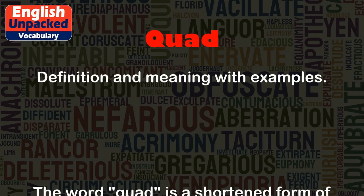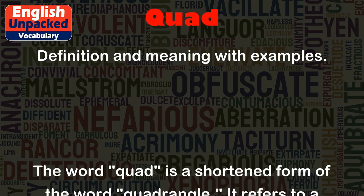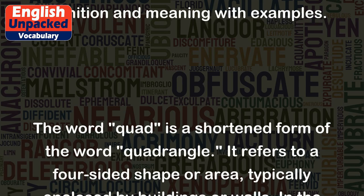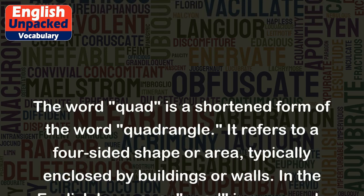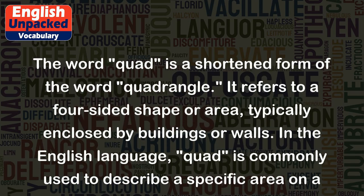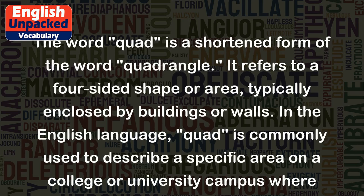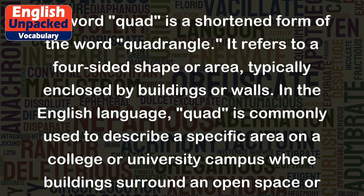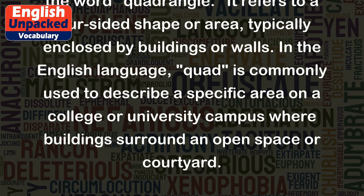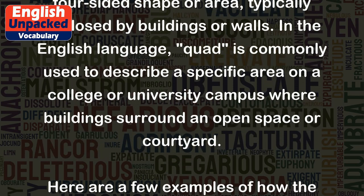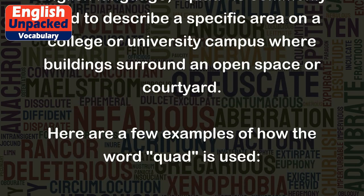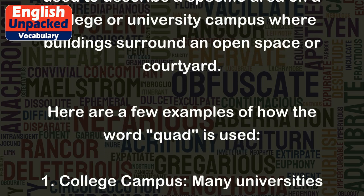Quad. The word quad is a shortened form of the word quadrangle. It refers to a four-sided shape or area, typically enclosed by buildings or walls. In the English language, quad is commonly used to describe a specific area on a college or university campus where buildings surround an open space or courtyard.